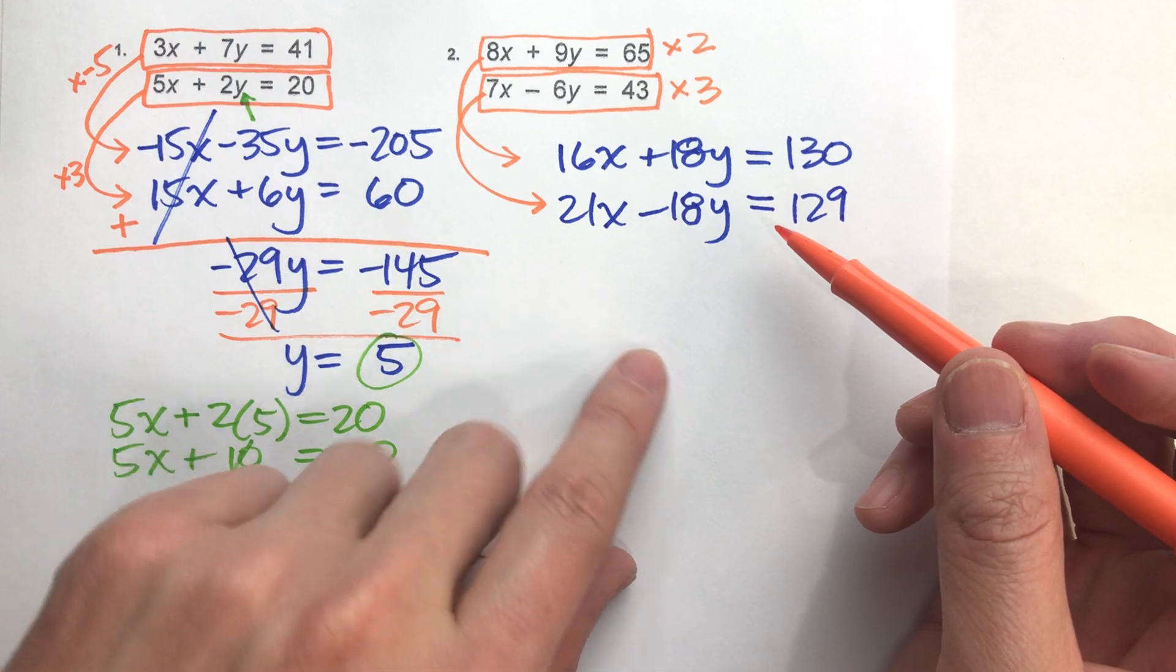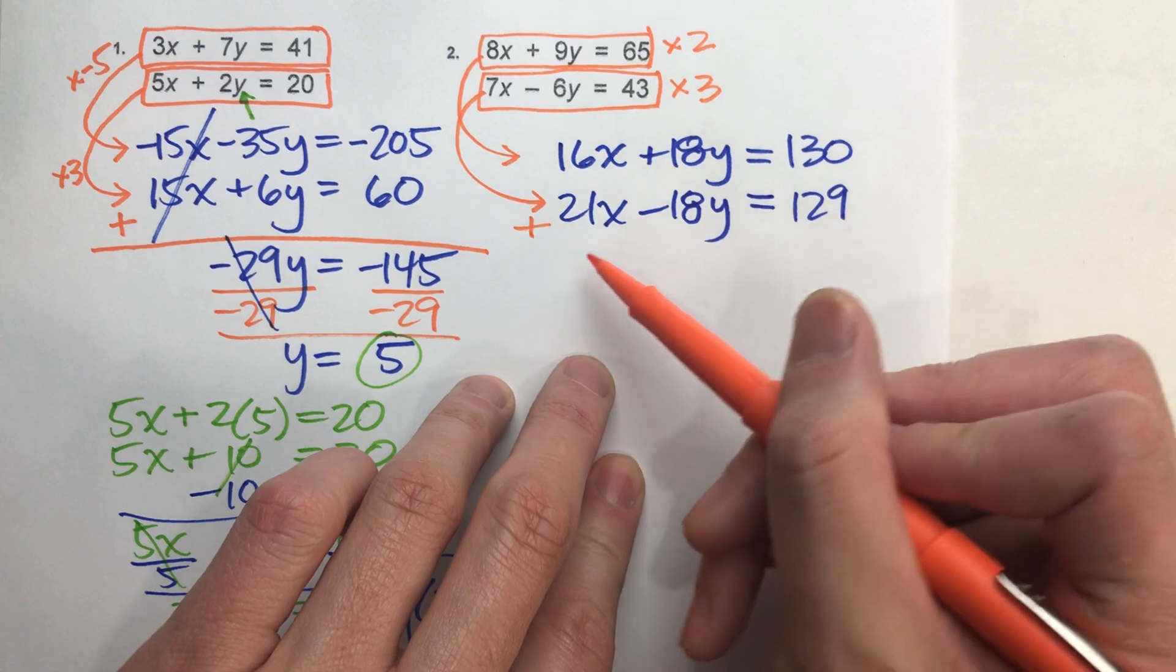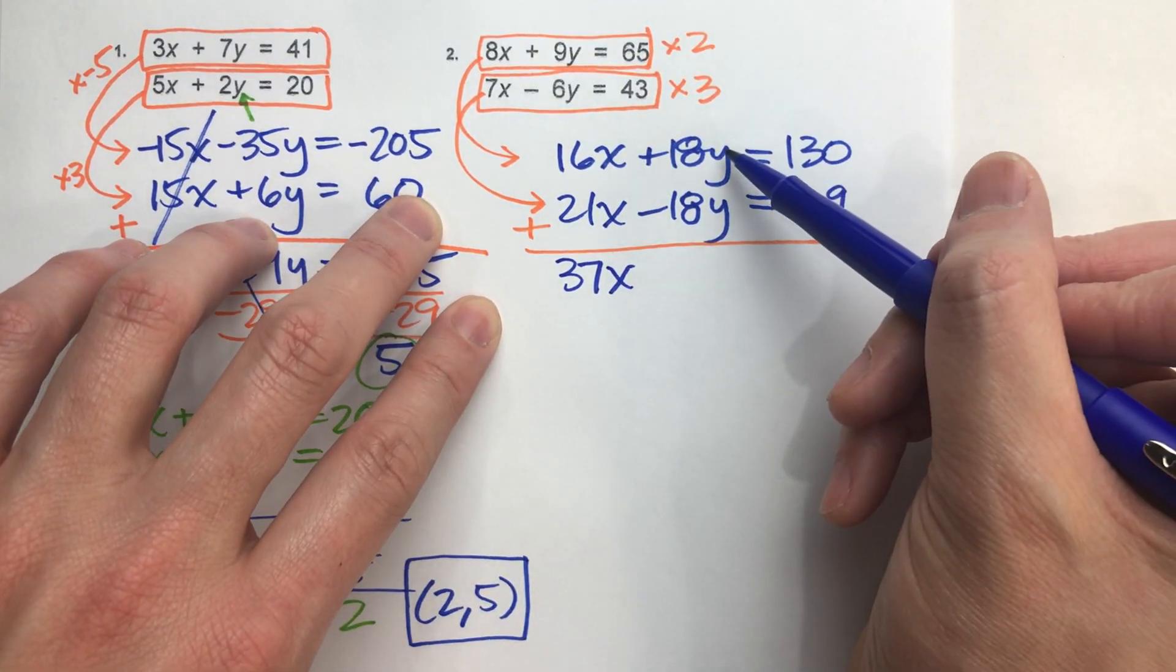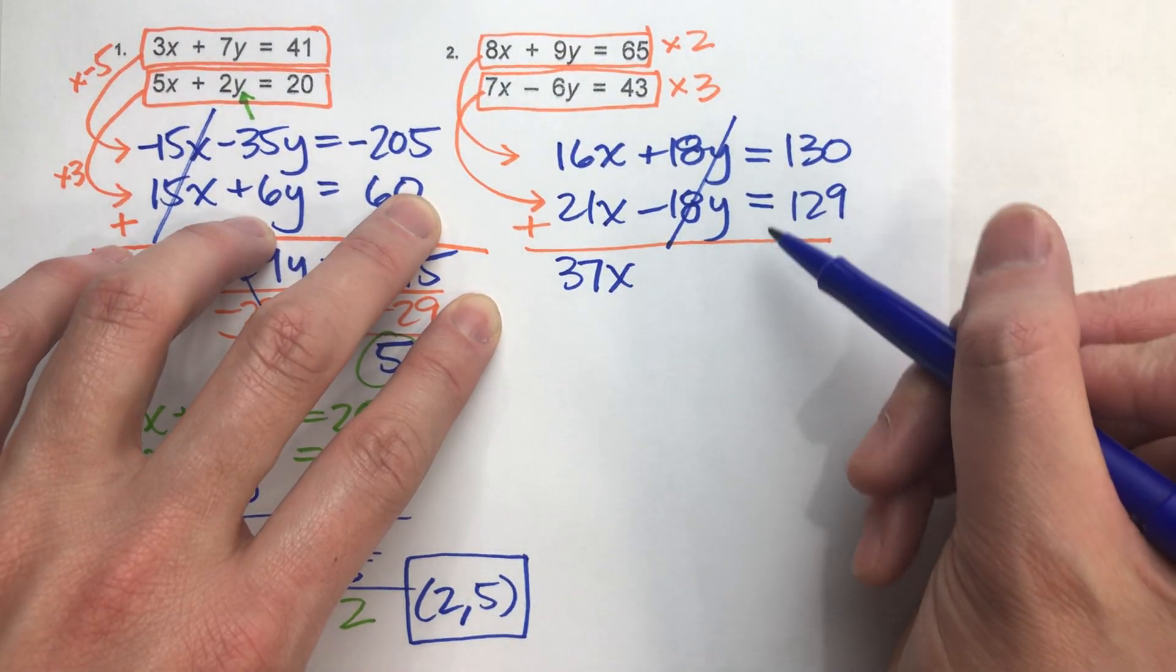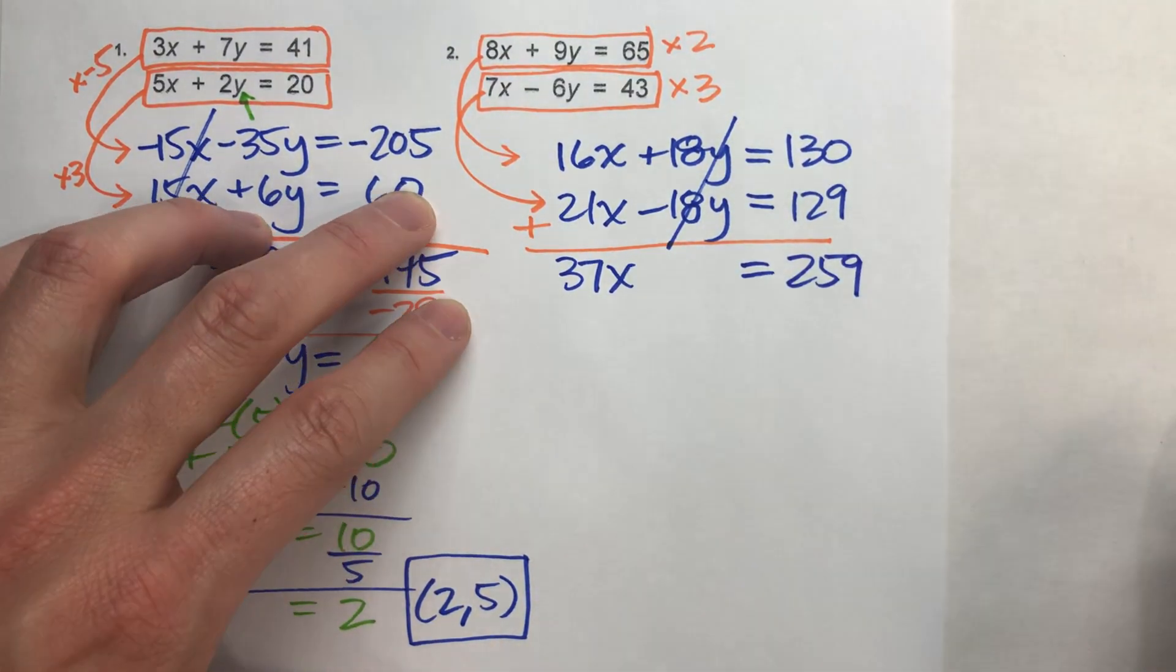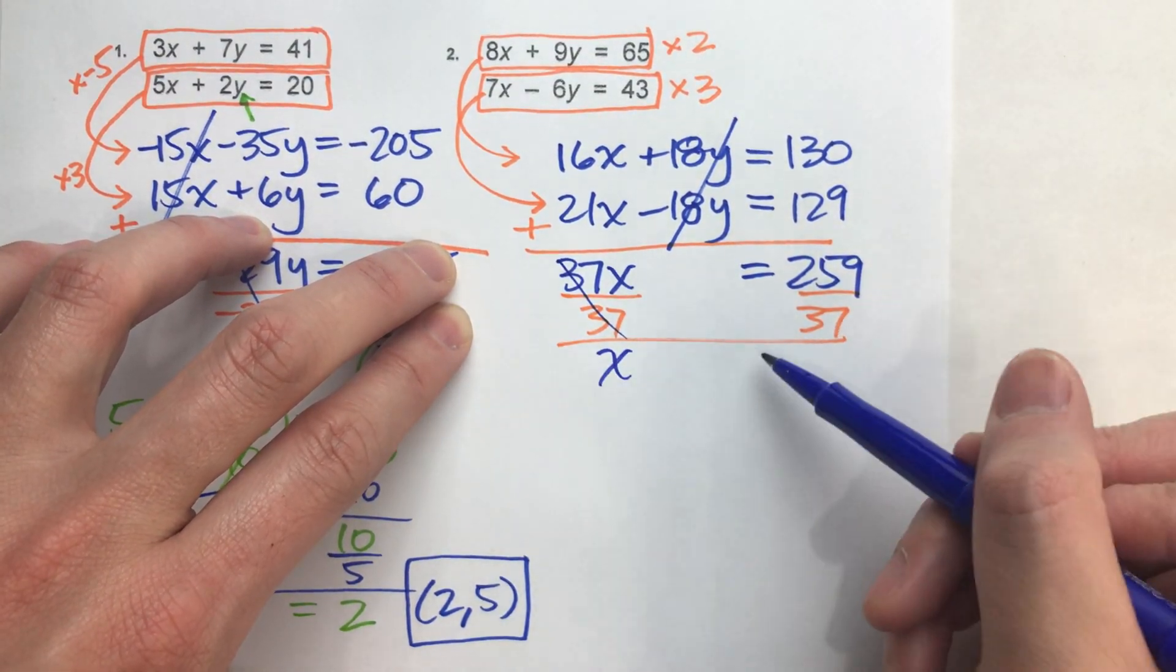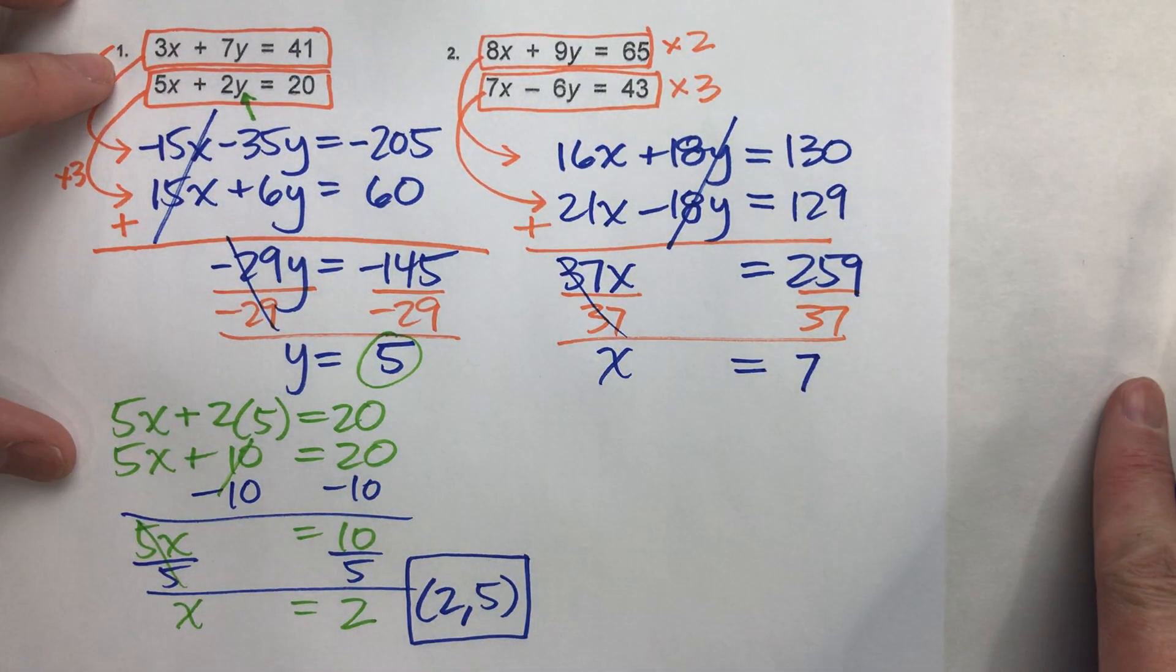So when we did that, it comes out perfect because, look, my y's are going to eliminate. So let's add them together. So 16x's plus 21x's is 37x's. 18y's plus negative 18y's leaves me with no y's. We've eliminated all the y's. And 130 plus 129 is 259. Now we can just solve for x. Divide by 37. We end up getting x equals 259 divided by 37 is just 7.